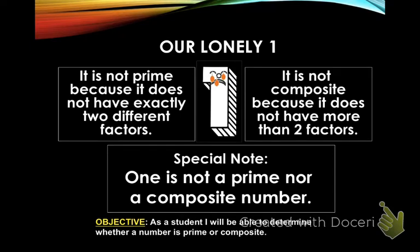Ladies and gentlemen, this is the end of our video. Make sure you have filled out your graphic organizer. The next thing you will do is a Sieve of Eratosthenes, and what you'll be doing with that video is finding all of the prime numbers from zero to one hundred. Good luck, have a wonderful afternoon, and if you need any help or are really confused, just come see me.